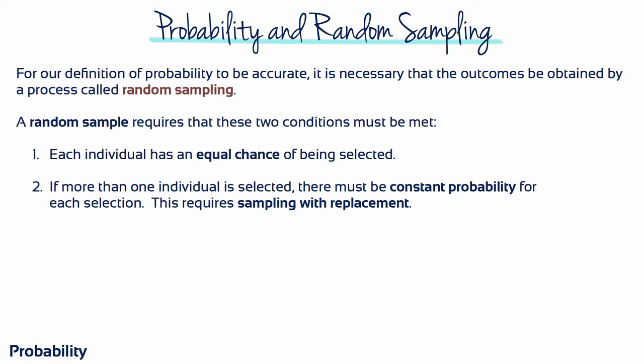For our definition of probability to be accurate, it's necessary that the outcomes be obtained by a process called random sampling. A random sample requires that two conditions be met. First, each individual has an equal chance of being selected. And second, if more than one individual is selected, there must be constant probability for each selection — this requires sampling with replacement.